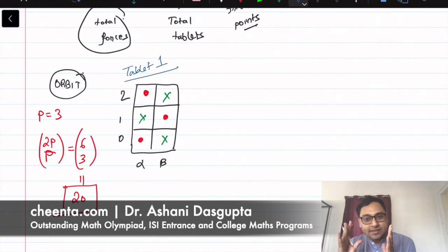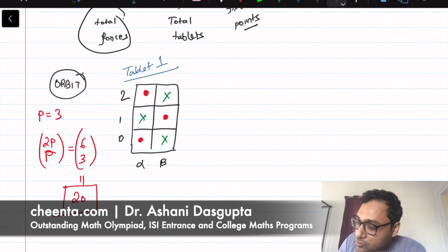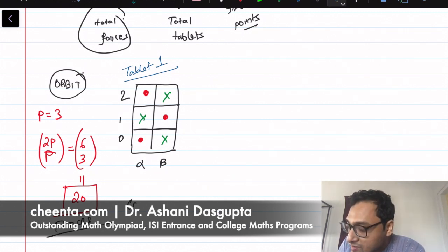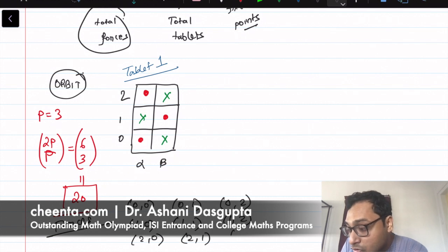What we will do is put a force on this particular tablet. The forces were: (0,0), (0,1), (0,2), (1,0), (1,1), (1,2), (2,0), (2,1), and (2,2). Each of these forces acts on these tablets and converts each tablet into something else.